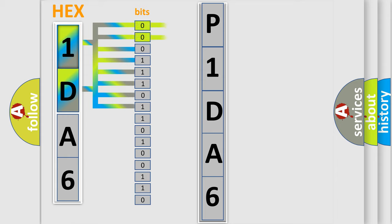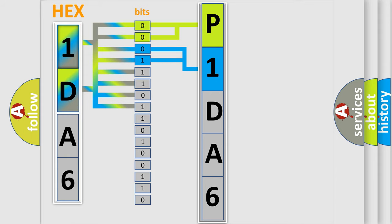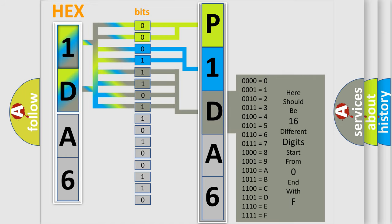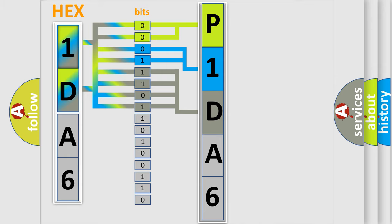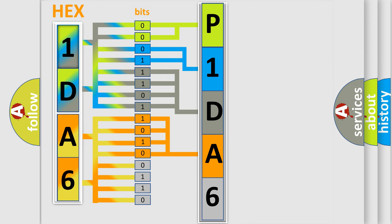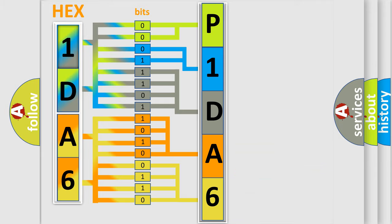By combining the first two bits, the basic character of the error code is expressed. The next two bits determine the second character. The last bits of the first byte define the third character of the code. The second byte is composed of a combination of eight bits. The first four bits determine the fourth character, and the combination of the last four bits defines the fifth character. A single byte conceals 256 possible combinations.